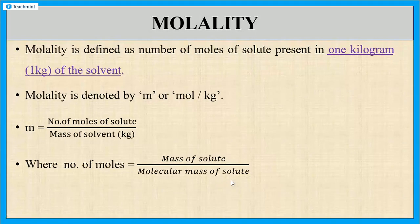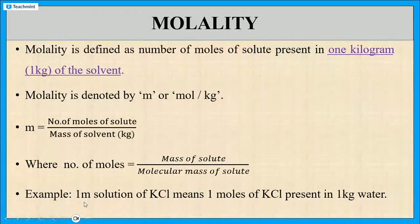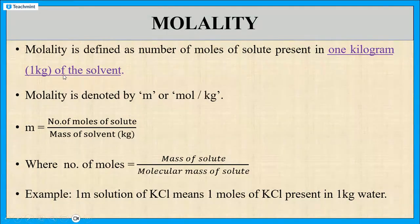To understand the molality concept, we will give an example: a 1m solution of potassium chloride. Note it is small letter m. If it is capital letter M, that is molarity; small letter m means molality. A 1m solution of potassium chloride means 1 mole of potassium chloride present in 1 kg of water.